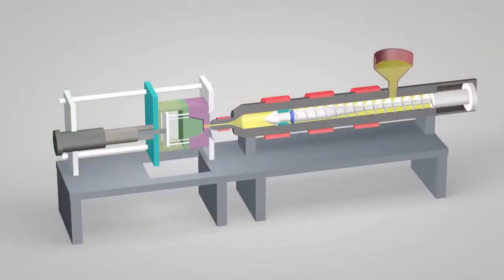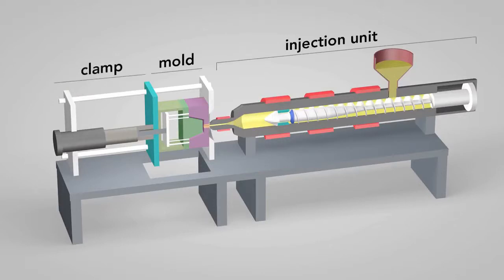An injection molding machine has three main parts: the injection unit, the mold, and the clamp.